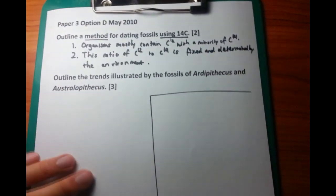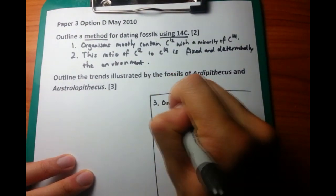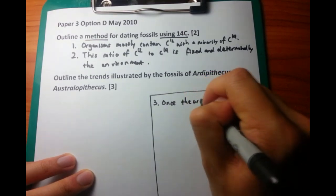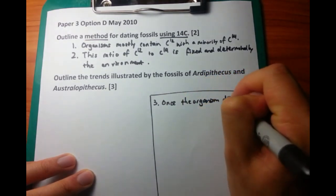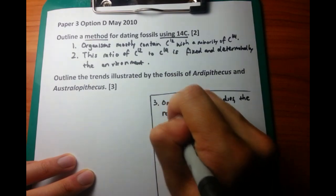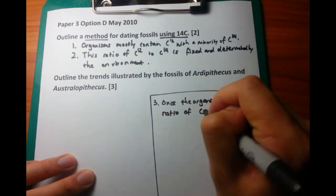Now, moving down the paper, the third point is that once the organism dies, the ratio of carbon-14 to carbon-12 decreases, because you're not ingesting any more radioactive carbon when you're dead.